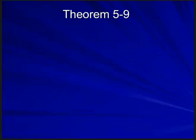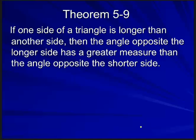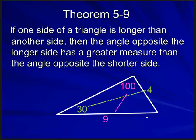Our next theorem says: if one side of a triangle is longer than another side, then the angle opposite the longer side has a greater measure than the angle opposite the shorter side. Take it one phrase at a time and picture it — drawings are helpful. Here's a triangle: nine is longer than four, so the angle opposite the longer side is going to be bigger than the angle opposite the smaller side.